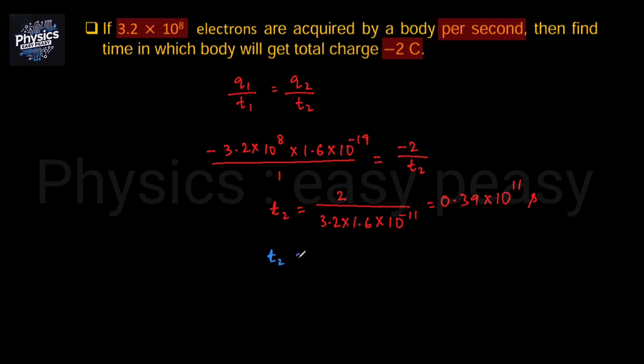So T2 is equal to 0.39×10^11 divided by 1 complete year: 365.25 days, 1 day is 24 hours, 1 hour is 60 minutes, 1 minute is 60 seconds. Now we have to solve this value.